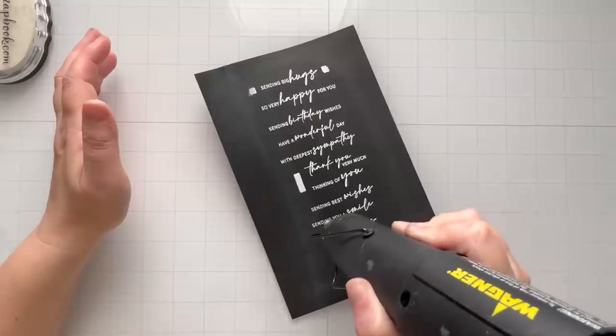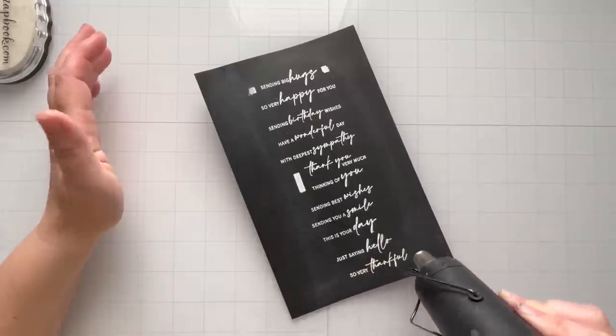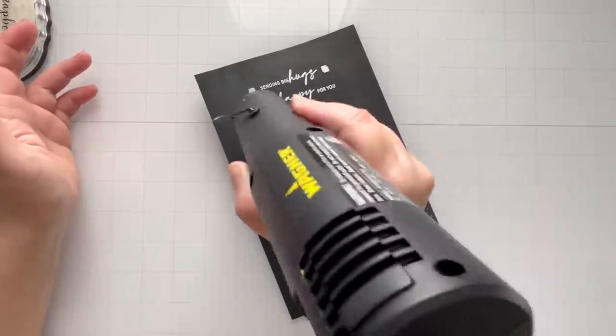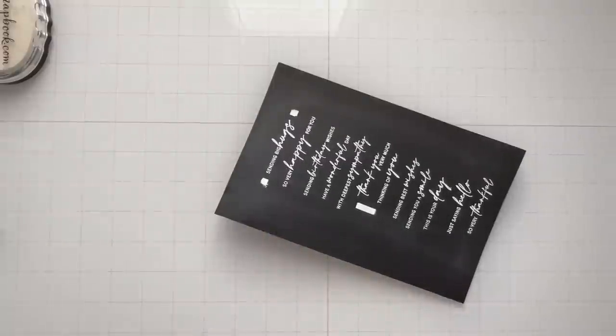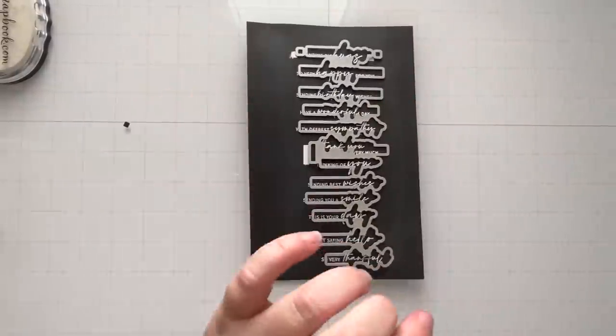I've gone ahead and added the white superfine embossing powder. I poured all the excess back into the jar. And now I'm going to go ahead and heat set this. Rule of thumb anytime you're doing heat embossing is to go ahead and let your heat tool set up for a good 25, 30 seconds. Let it warm up and then everything will melt just very quickly. So here's the coordinating die. And so I'm just lining up the two squares at the top and that rectangle in the middle.